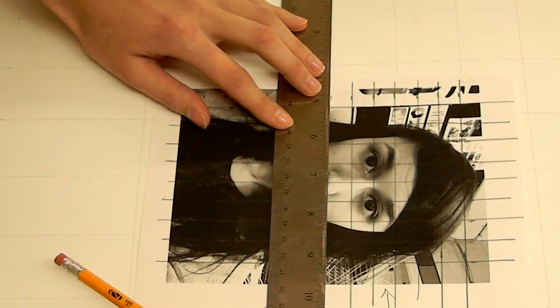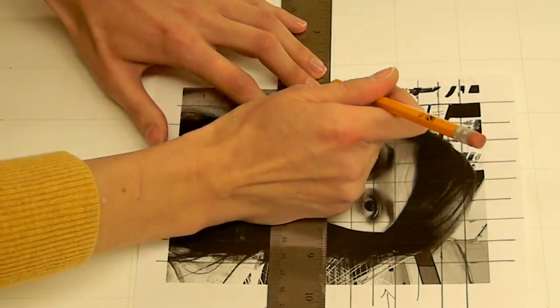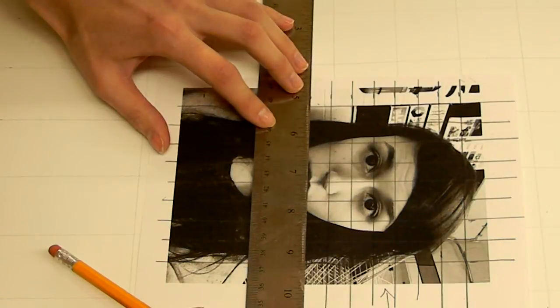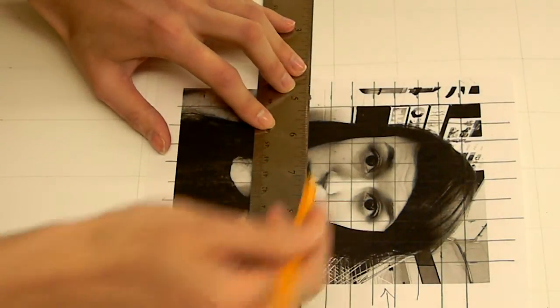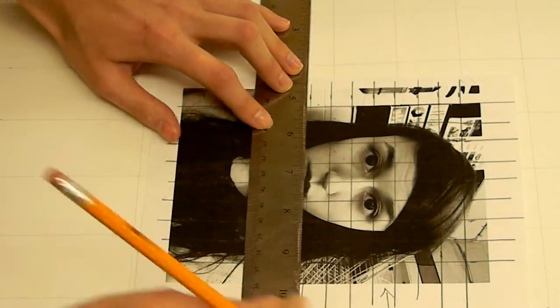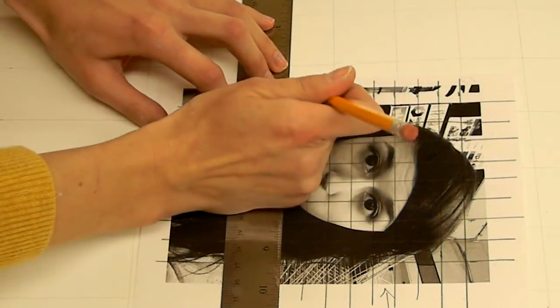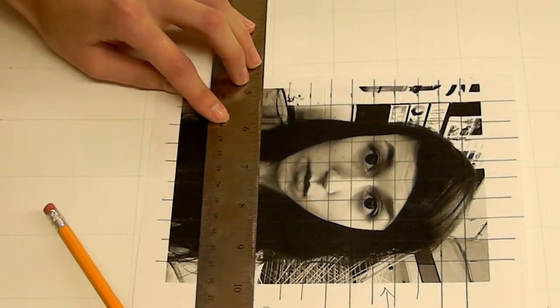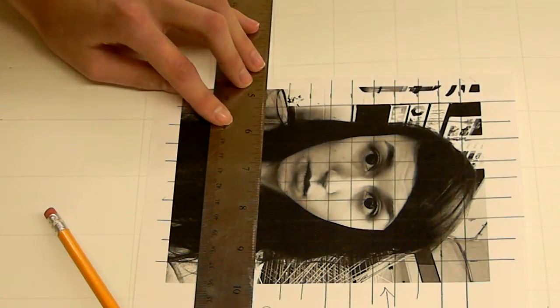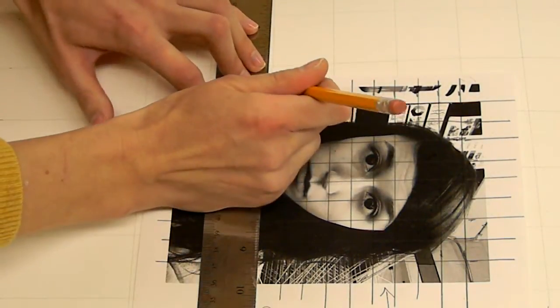We're going to be tripling this up, going from a half inch grid over our photograph to a 1.5 inch grid on our paper.